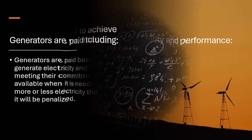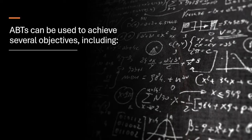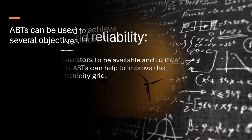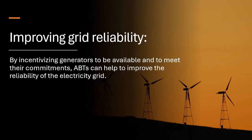ABTs can be used to achieve several objectives, including improving grid reliability. By incentivizing generators to be available and to meet their commitments, ABTs can help to improve the reliability of the electricity grid.